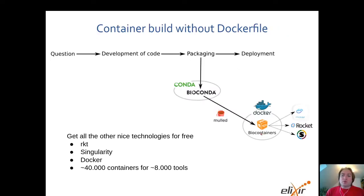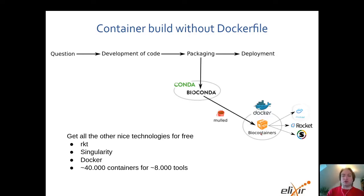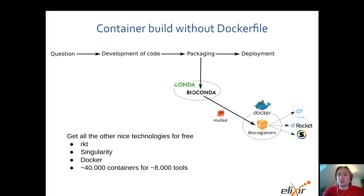So what we have developed is a tool called Malt that automatically converts a package into a container. By default, we generate both Rocket, Singularity, and Docker images and distribute them to our community.